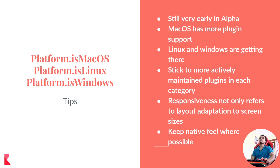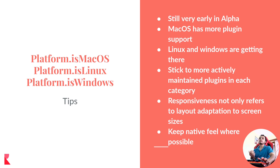Talking about desktop — Mac, Windows, and Linux — it is still in early alpha stage. macOS has more plugin support than other platforms like Linux and Windows, but they are getting there. You need to stick to more actively maintained plugins in each category so that whenever new platform support is released in Flutter, those active plugins are the ones to add it. Official plugins are already adding support for desktop as well.